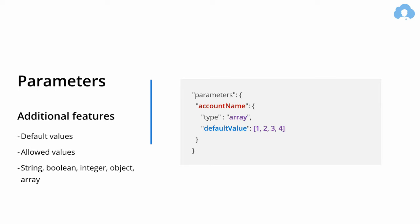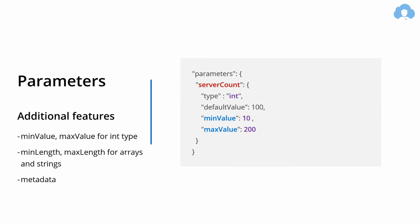You can also get additional features like 'minValue' and 'maxValue' for integer validations, 'minLength' and 'maxLength' for arrays and strings, or 'metadata' to describe parameters. There are many options to play around with to make sure the parameters for your templates are as generic as possible while maintaining the quality of the passed parameters.